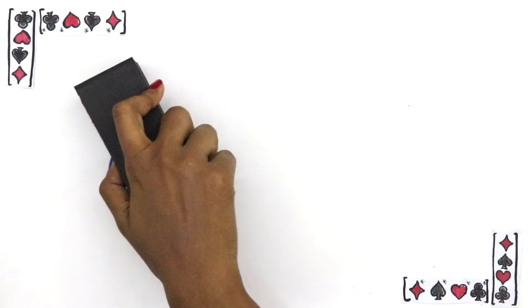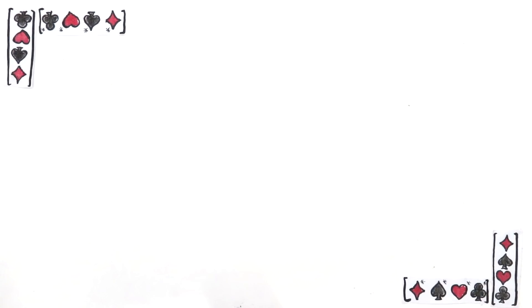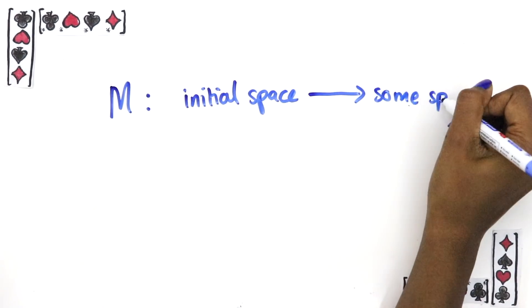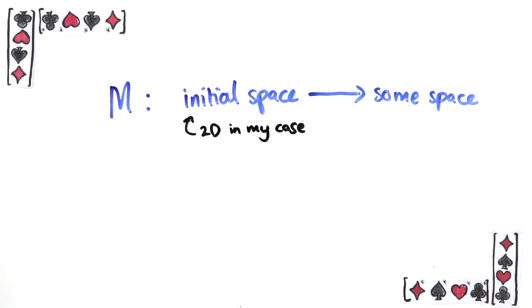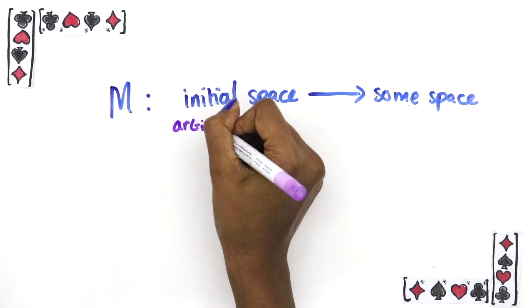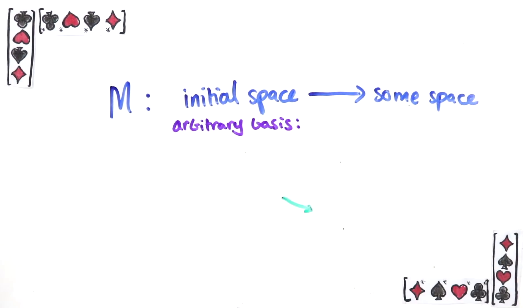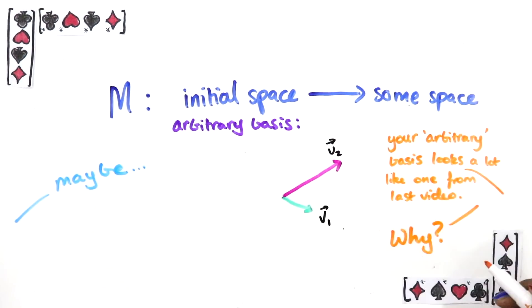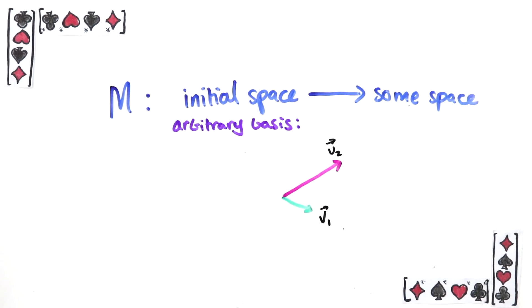But here's the really nice thing about linear transformations. Imagine you have a linear transformation from some initial space to some other space and you have an arbitrary basis for your initial space. Now let's suppose that we know exactly what the linear transformation does to the basis vectors. This is in fact enough to figure out what it does to the entire space.